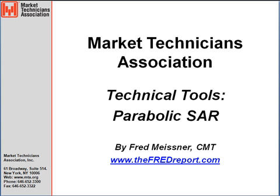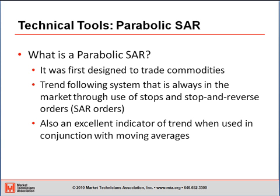This is a more interesting indicator than some of the others because of the genesis of the indicator, which we'll discuss next. The Parabolic Stop and Reverse Indicator was first designed to trade commodities in the 1970s. Back then, the uptick rule in stocks meant this indicator was not used on stocks. Like a lot of Wells Wilder's indicators, it has been transferred over to the stock market, and now that the uptick rule is gone, you can actually use the Parabolic System to trade stocks.